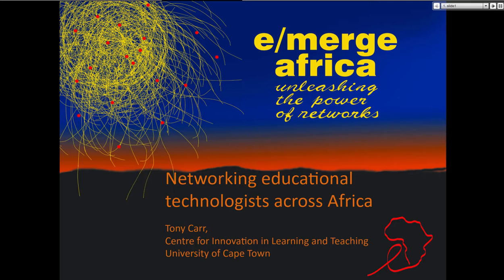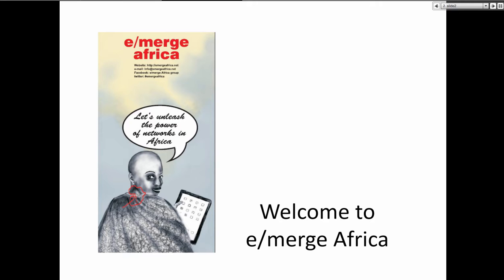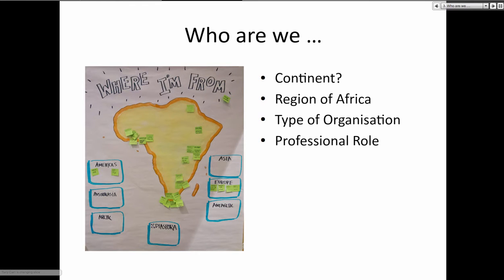I'm based at the University of Cape Town Centre for Innovation and Learning and Teaching. I'll talk a little bit about the eMerge Africa network — where it's come from and what it does. Very simply, it's about growing a network for primarily educational technologists in higher education in Africa, and that means practitioners and researchers where conversations can flow between them.